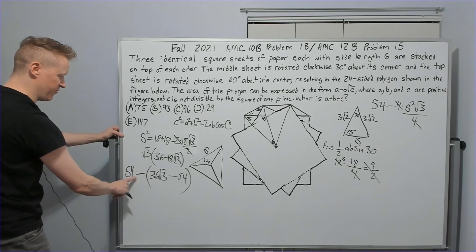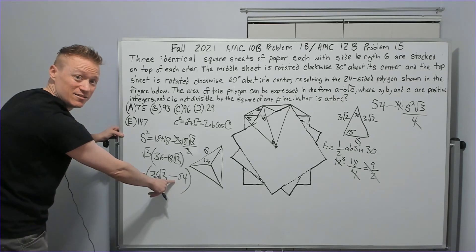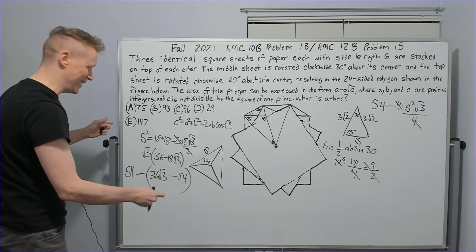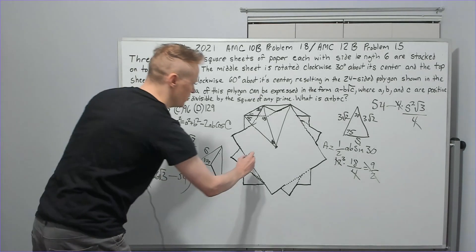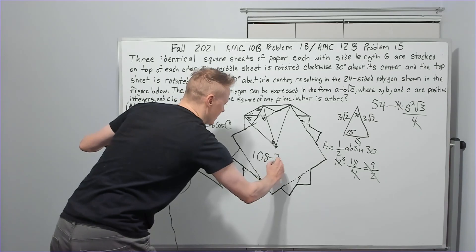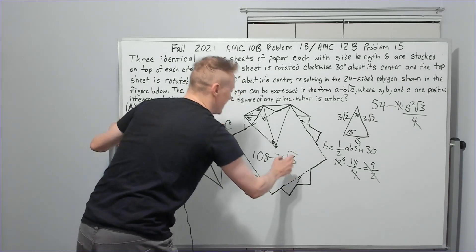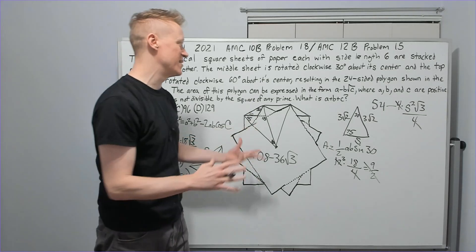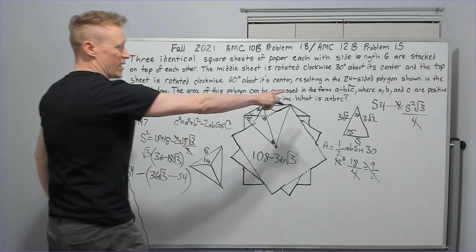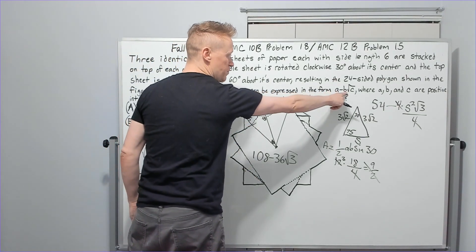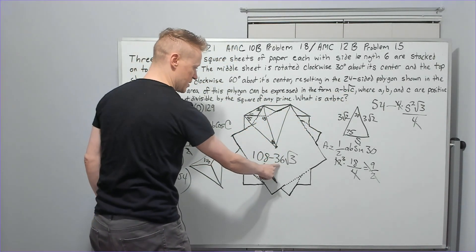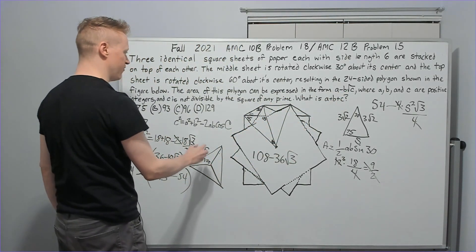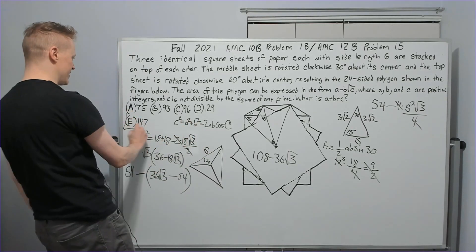This is S squared root three. The minus sign is still there and you've got the 54. So you've got 54 minus a negative. That's 108 because you're adding. And then it's minus 36 root three. 108 minus 36 root three. Inspect. Is the C, the inside of the square root reduced? It is. We're done. Is it the right form? A minus B root C. A minus B root C. 108 and 39, 147. Answer choice E.